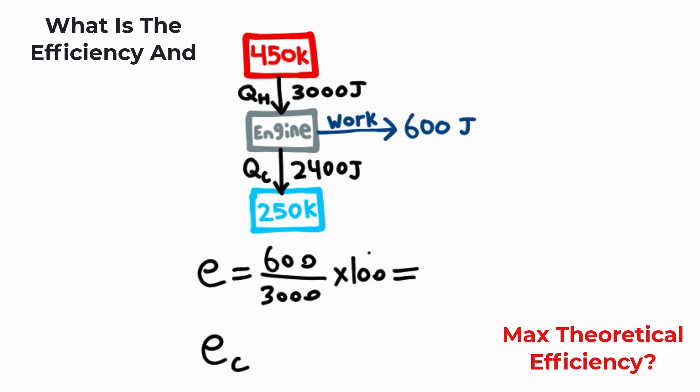Now, if you go ahead and evaluate all these numbers, you should get a value of 20%. But I also need to calculate the theoretical efficiency, the maximum theoretical efficiency. So I can do this by taking 1, and then subtracting off a ratio of the temperatures here.